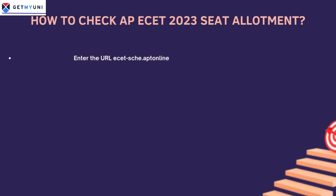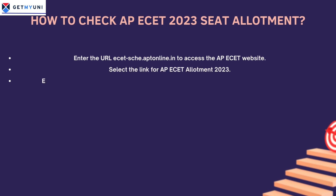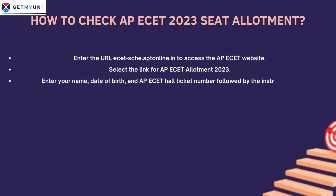Step 1: Enter the website URL to access the APECET website. Step 2: Select the link for APECET Allotment 2023. Step 3: Enter your name, date of birth, and APECET hall ticket number followed by the instructions.